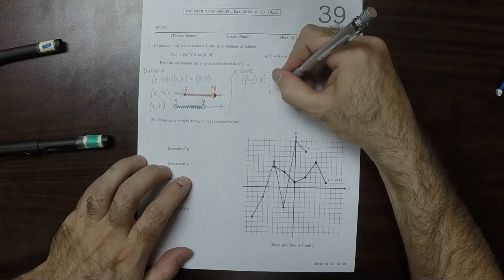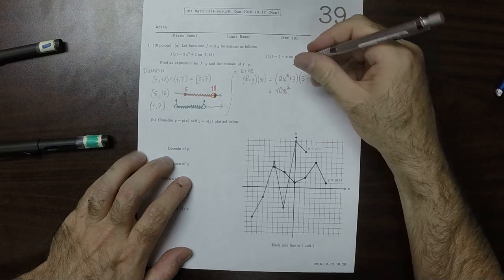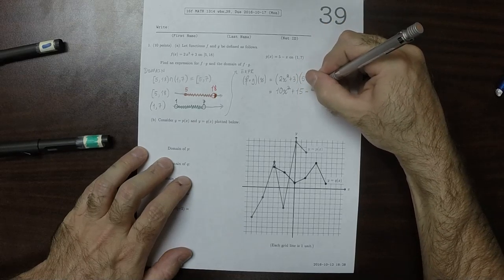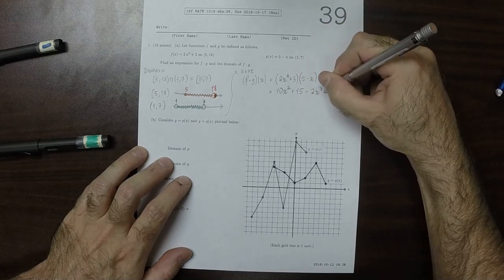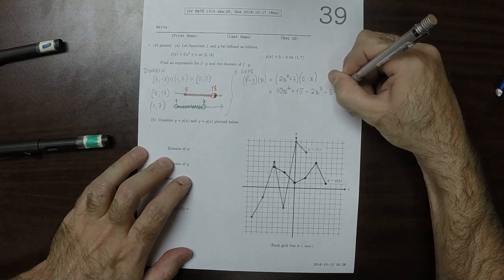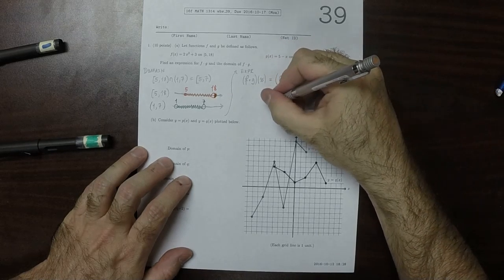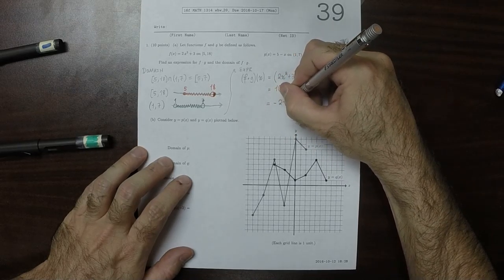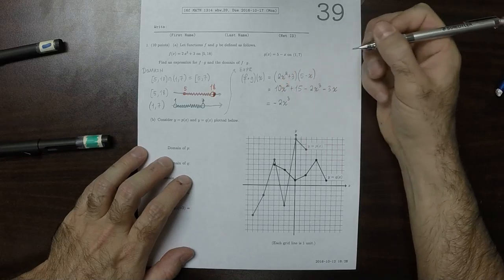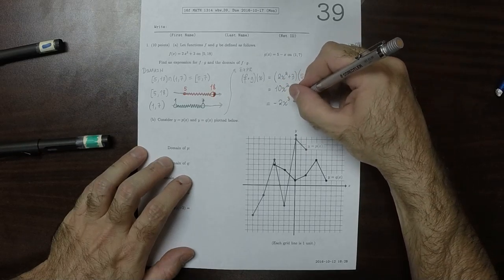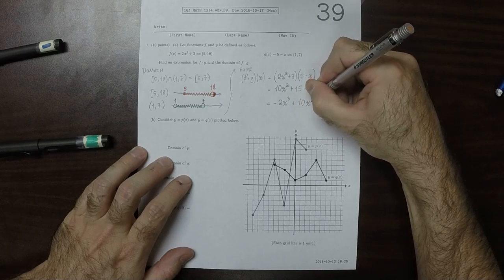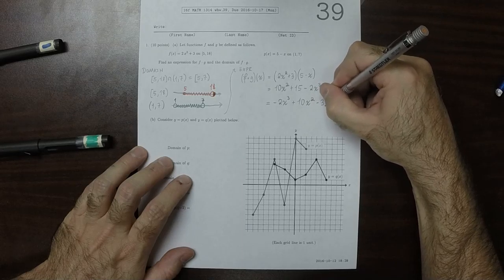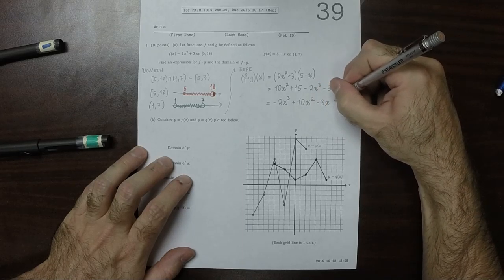So that would be 10x squared plus 15 minus 2x cubed minus 3x. And that would be fine, but I'm going to write the terms in descending order of degree. So negative 2x cubed plus 10x squared minus 3x plus 15.